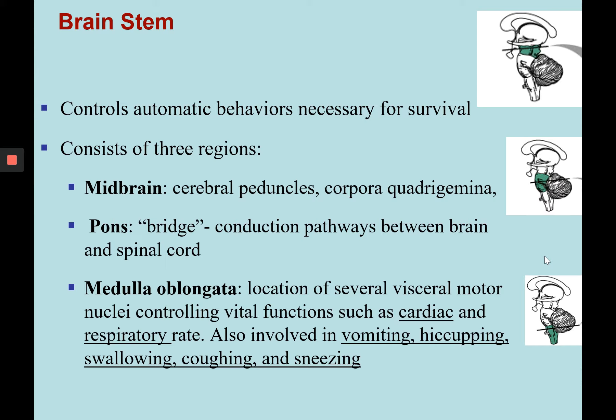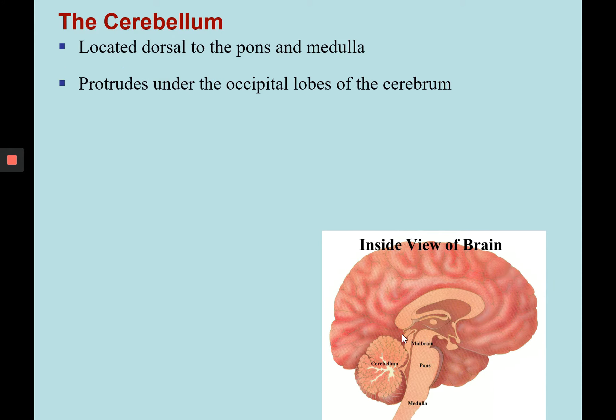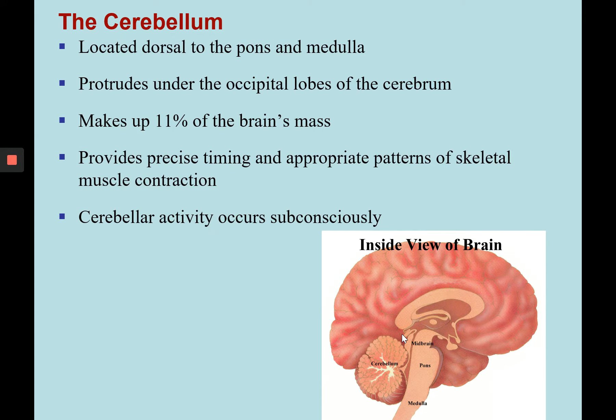Another center in the medulla oblongata is the micturition center, which controls urination. Here we can see the diencephalon, and below the diencephalon is the first part of the brainstem, the midbrain. We can see all the conduction fibers of the pons and the medulla oblongata below that. The medulla oblongata is continuous with the spinal cord.